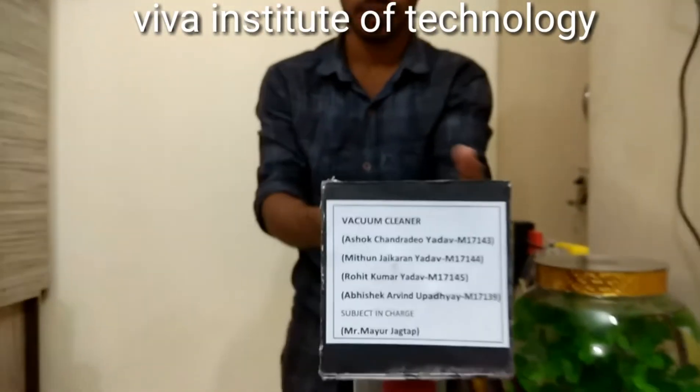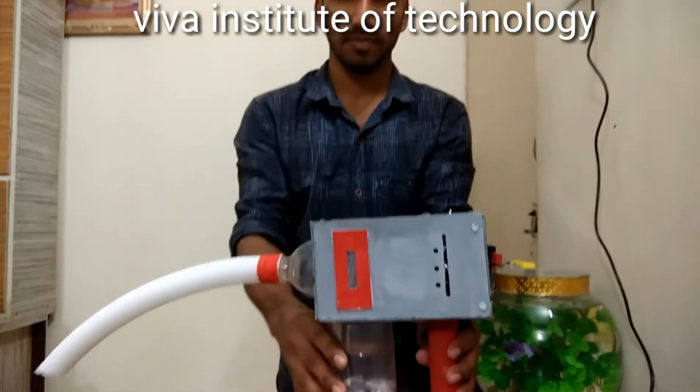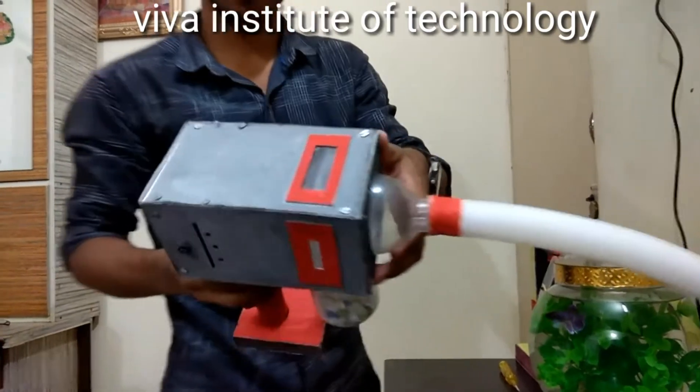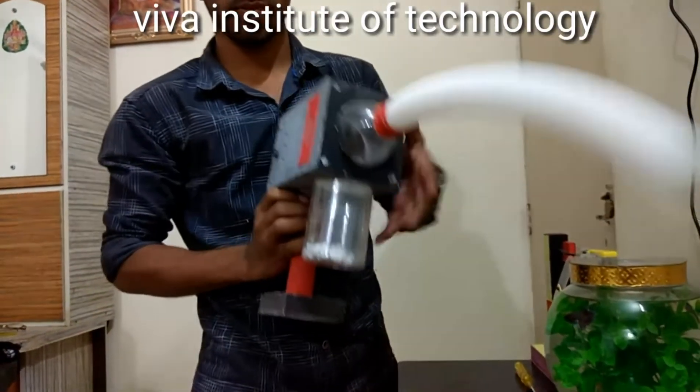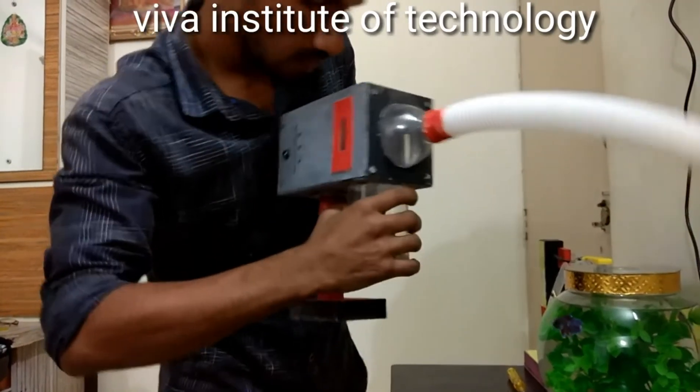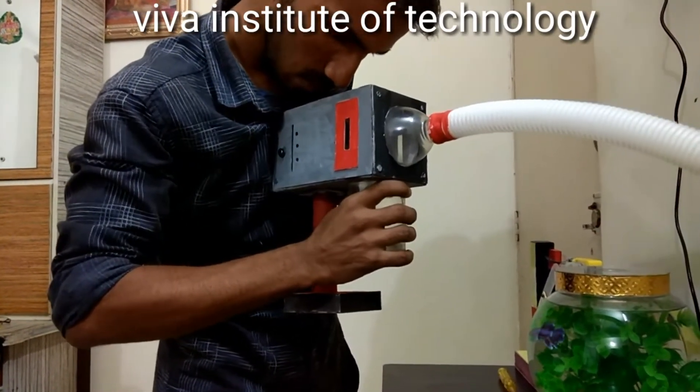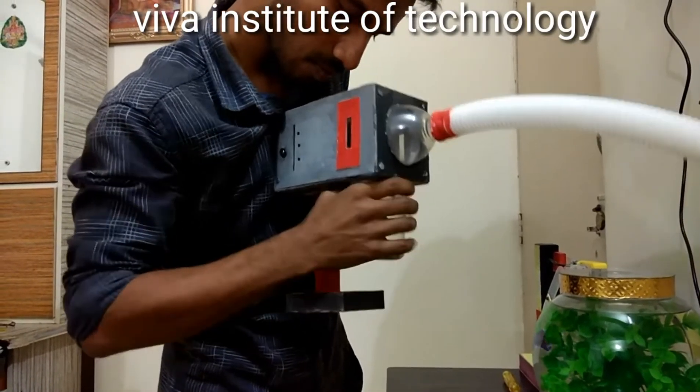To balance the pressure inside the vacuum cleaner, air along with dust and paper is sucked into the suction hose because of the pressure difference. Hence, the dust and paper get accumulated in the collecting bag. This collecting bag is detachable so that you can remove the dust from it.